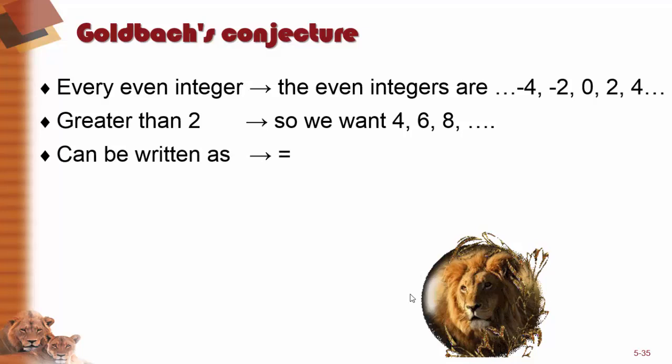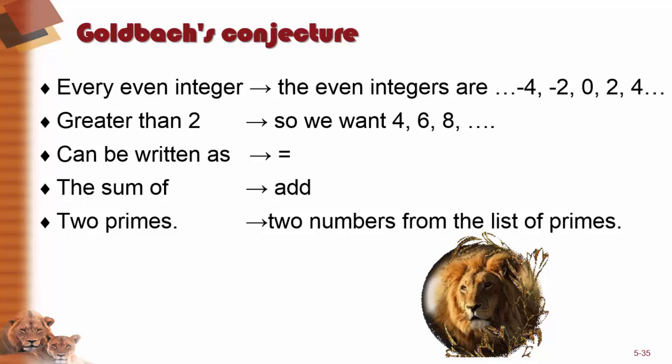Can be written as. Well, can be written as means that there's an equality there. The sum of - well, that means we're adding 2 primes, 2 numbers from our list of primes that we did earlier.